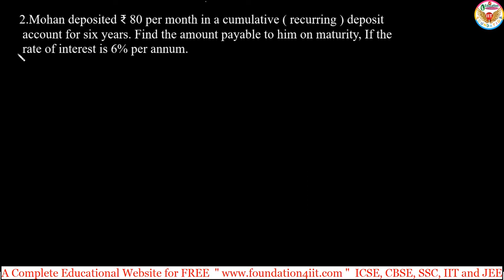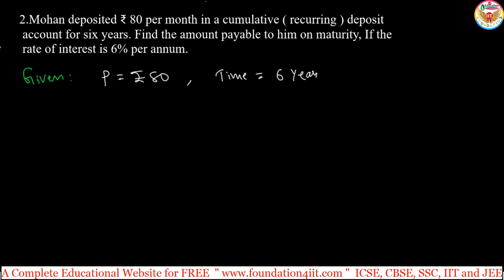Same concept we are applying now. First, write the given data clearly. Mohan deposited rupees 80 per month in a cumulative recurring deposit account, so P equals rupees 80. The time given is 6 years. Remember, N must always be in number of months — 6 years means 6 × 12 equals 72 months. So N equals 72 months, and rate of interest is 6% per annum.